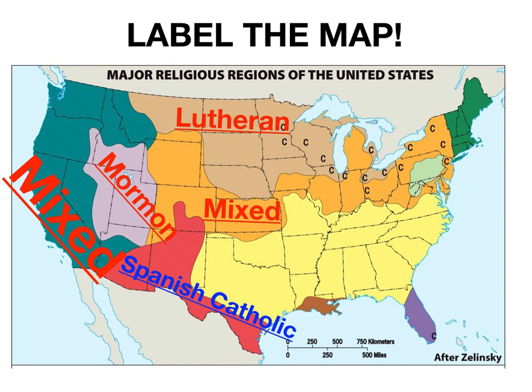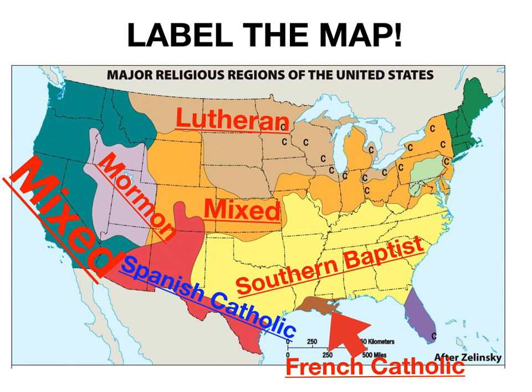Down in the southwest, the area near the border with Mexico, including New Mexico, Arizona, and southern Texas, is predominantly Spanish Catholic. The influence there, of course, is migration from Mexico and the rest of Latin America. Here in the southern United States, this is predominantly Southern Baptist.